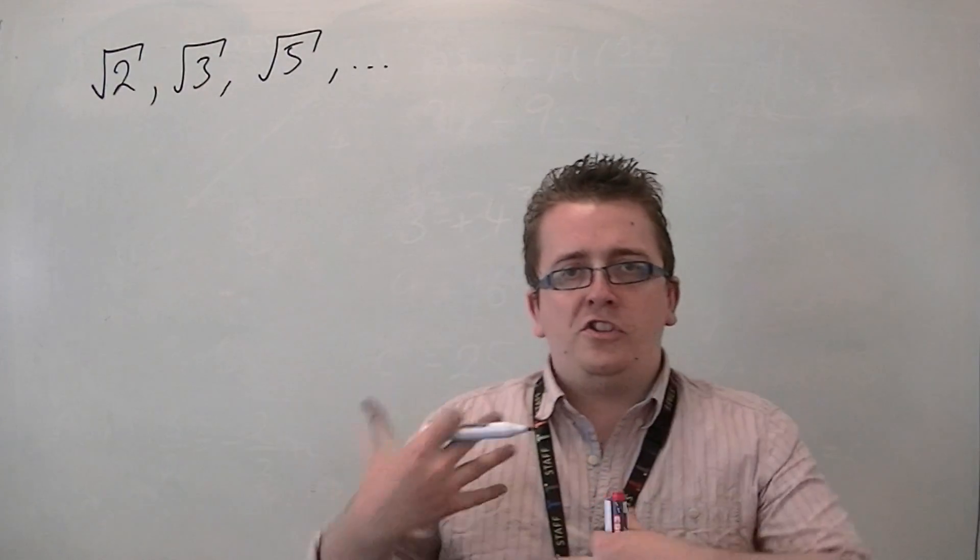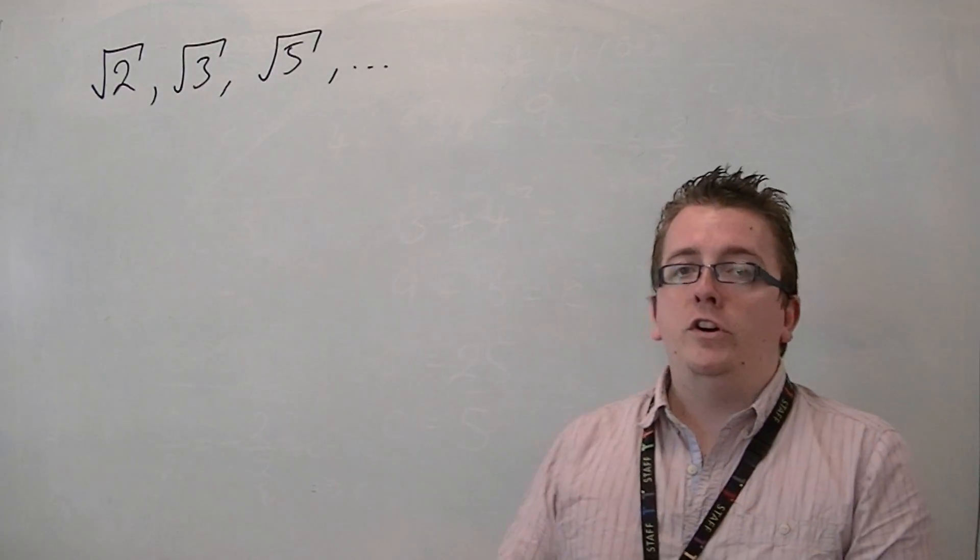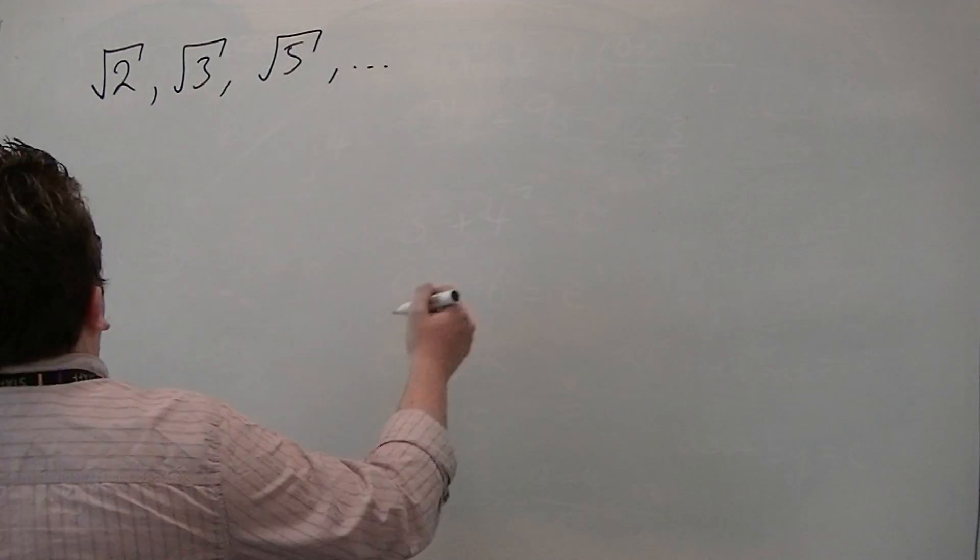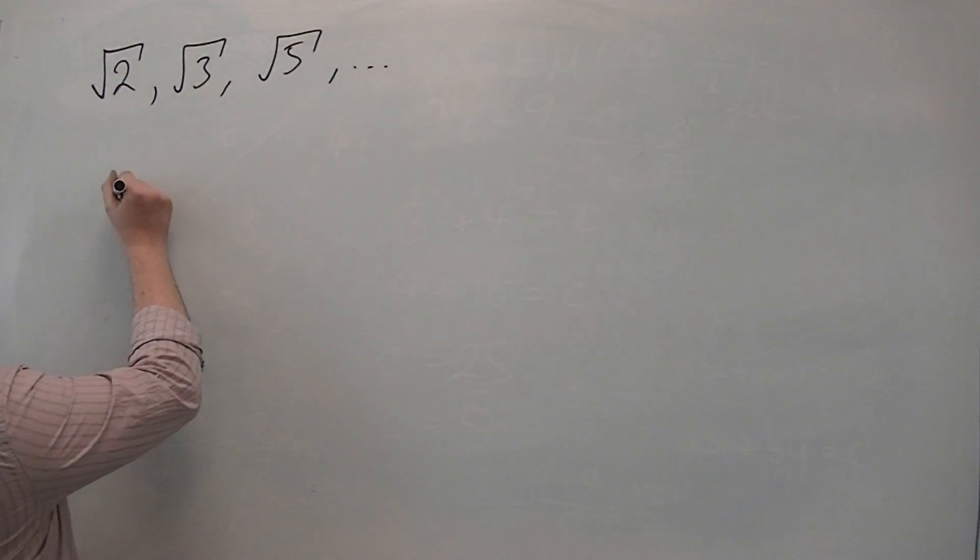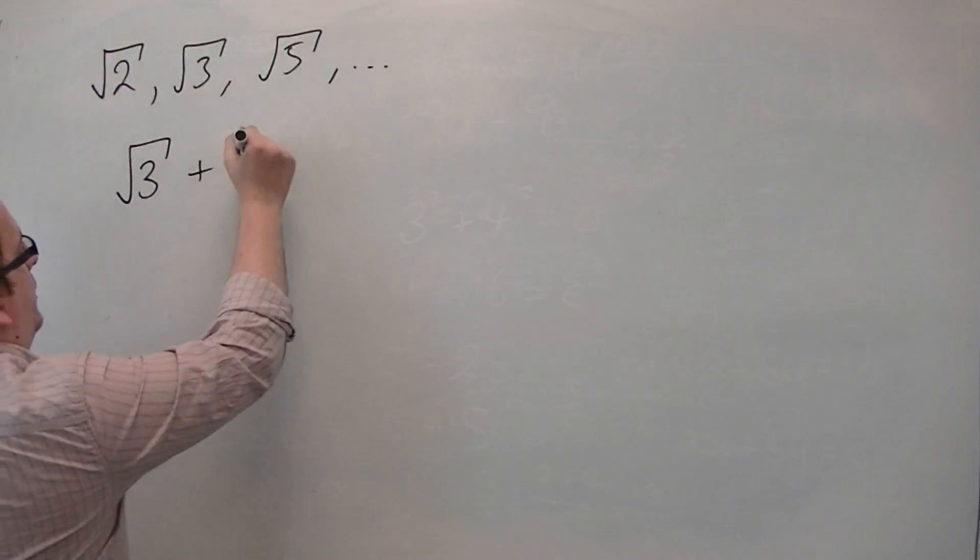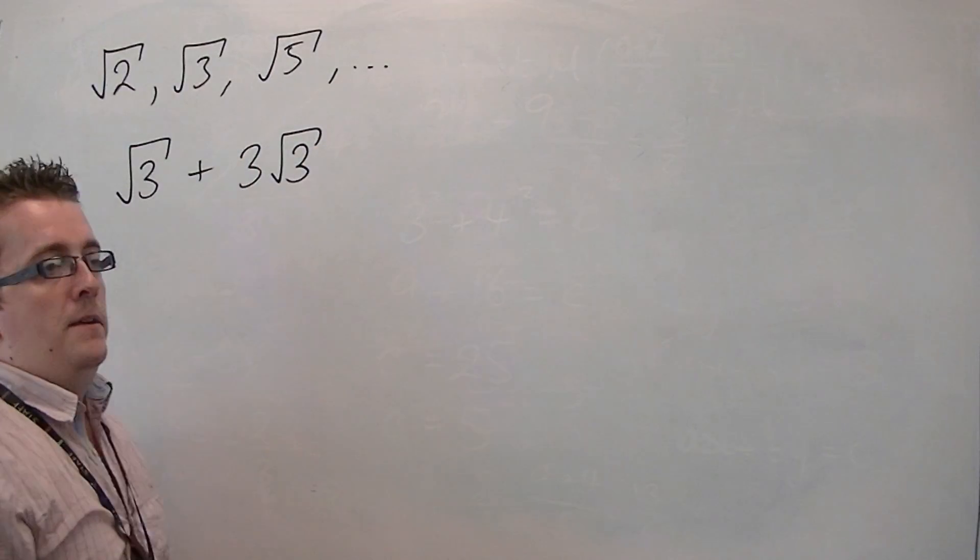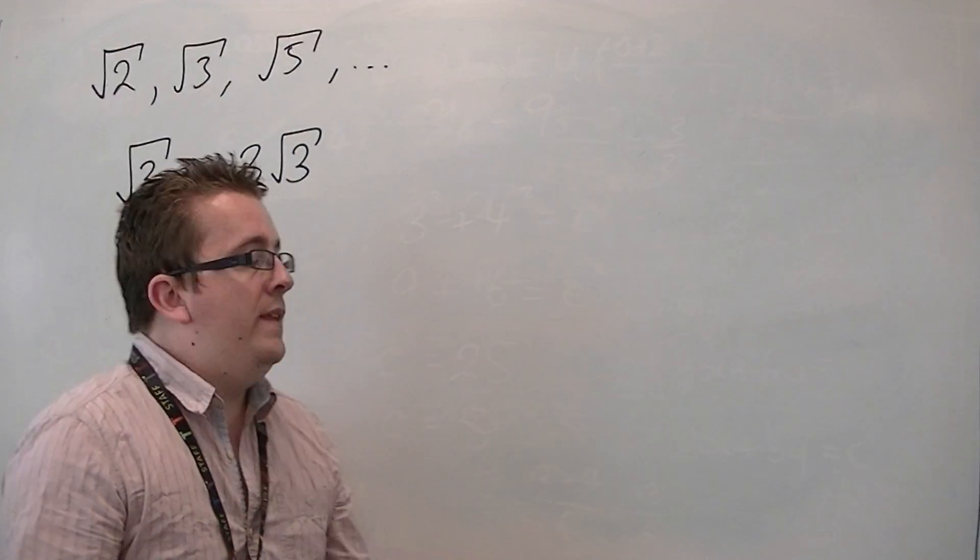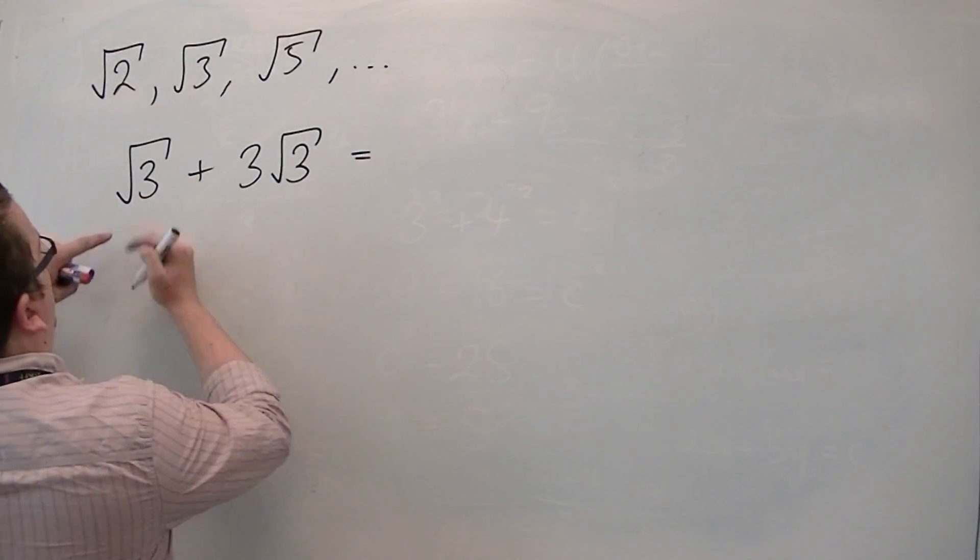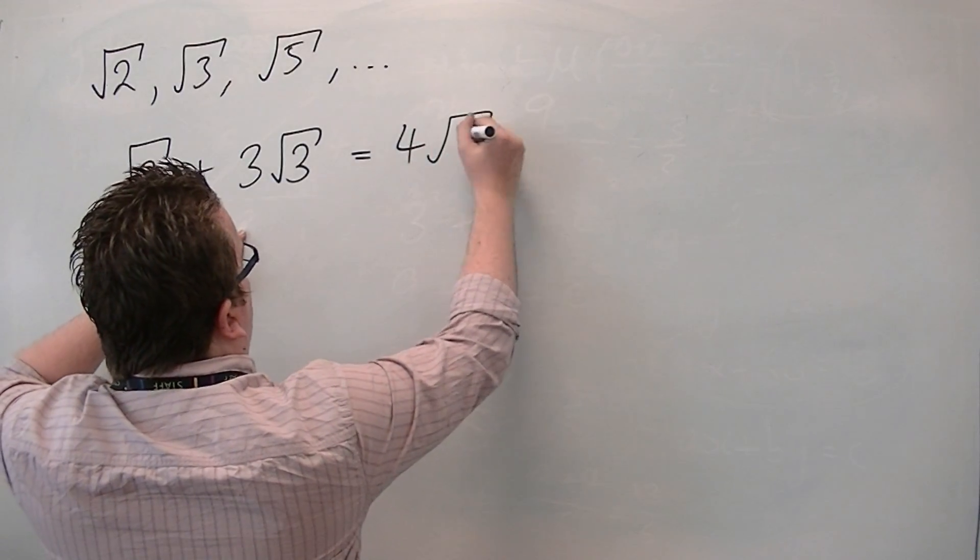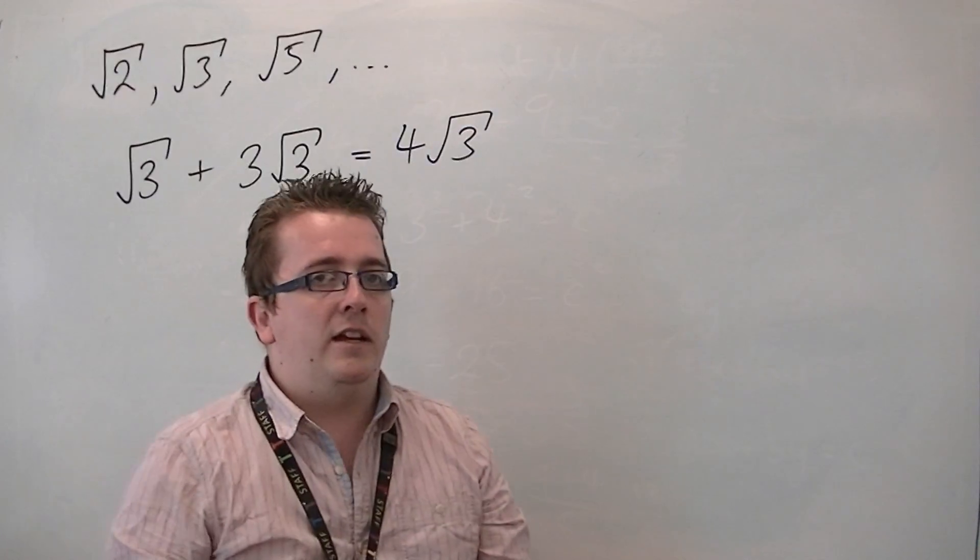Now, just to make sure that you are clear of what you can do with them. Well, first of all, if you've got root 3 plus 3 lots of root 3, then, as it works with algebra, if you've got 1 lot of root 3 plus 3 lots of root 3, then you've got 4 lots of root 3. So things like that can be simplified.